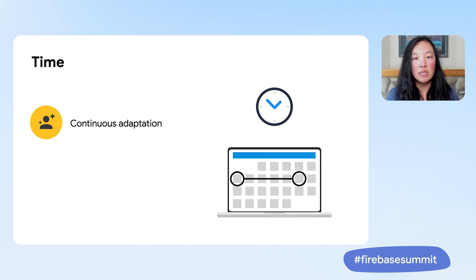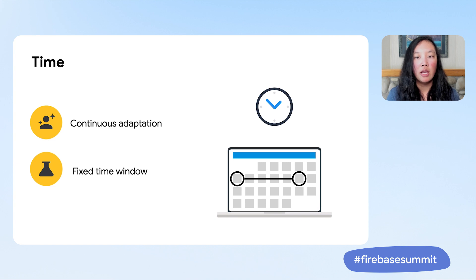For A-B testing, the experiments to compare experiences are across a set amount of time. Whatever outcome results from the experiment is what's true for users during the timeframe of the experiment. And if you wanted to check for the optimal experience in the future and make sure it's indeed still the optimal experience across your users, you can run another A-B test.